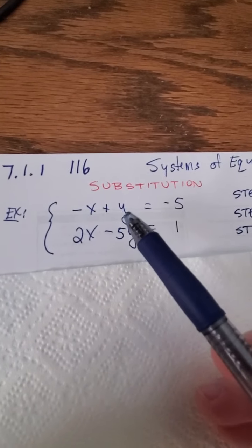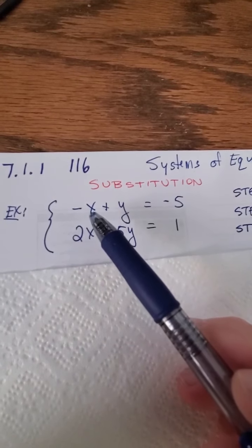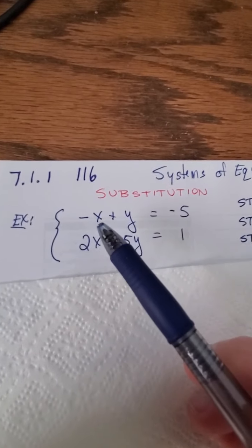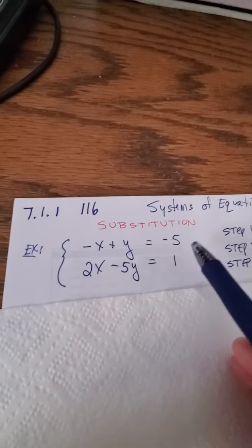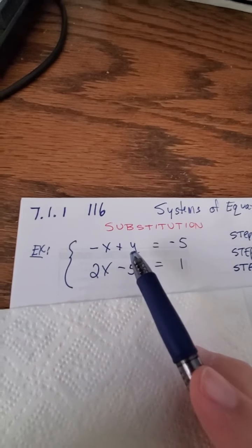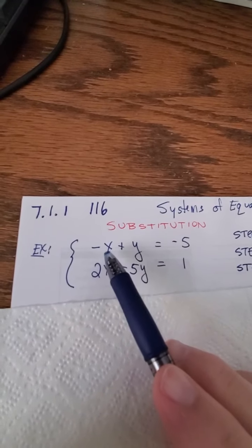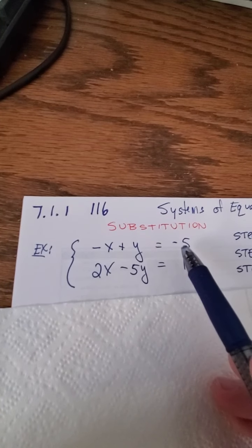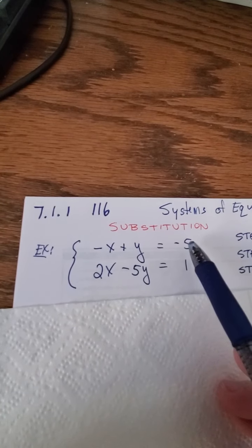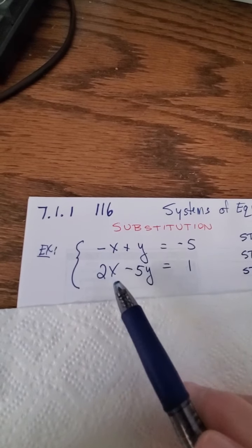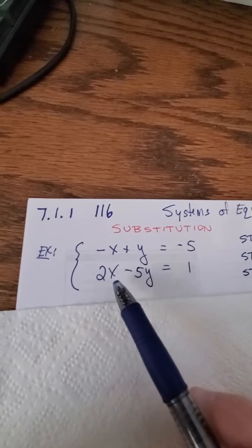If I would have x equals negative one and y equals negative six, so negative negative one is positive one plus negative six equals negative five, and that would solve the top equation. But those same two numbers would not solve the bottom equation. In order to be a solution of the system, I need an x and y that solve both equations. That's what the system is all about.